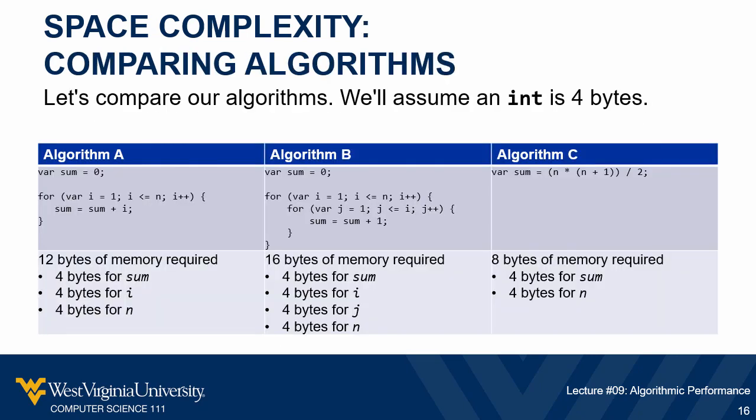If we take a look at our algorithms here, we can pretty easily figure out their space requirements just by looking at the variables. All of these algorithms are pretty space-efficient. We need space for keeping track of our sum — assuming a four-byte integer — so four bytes for that, four bytes for n, and on A and B some extra memory to keep track of loop counter variables, but at most we're looking at 16 bytes worth of memory. These are all basically constants in terms of the amount of memory required — the memory needed is not tied to the number of iterations or the size of our problem.